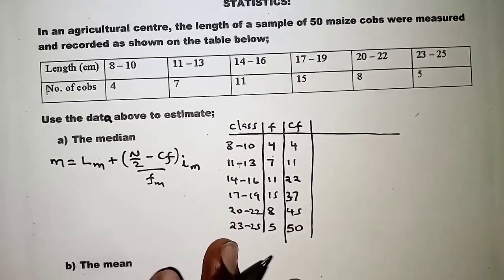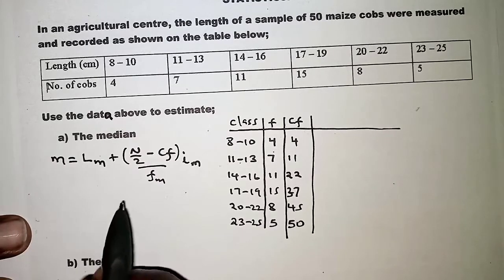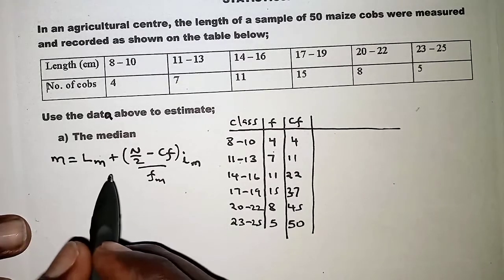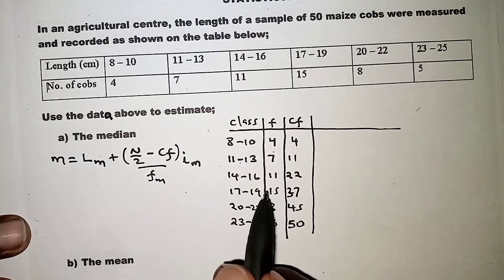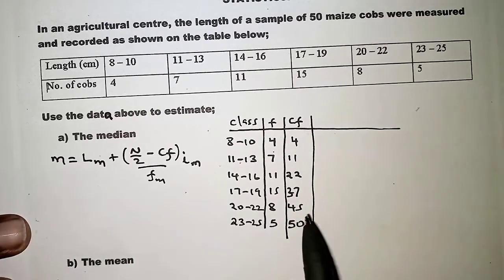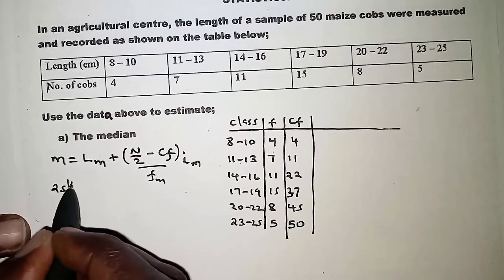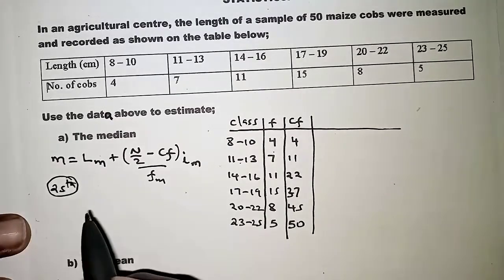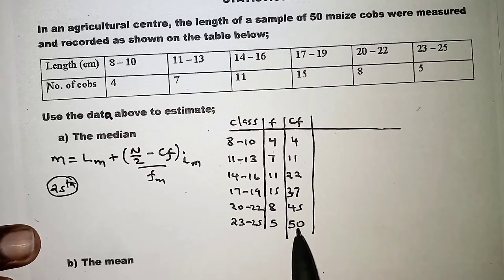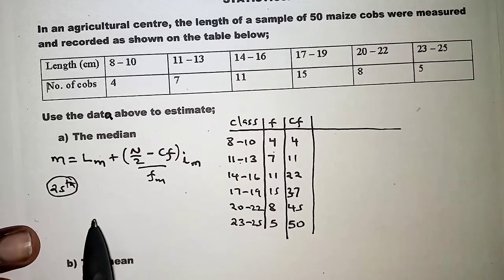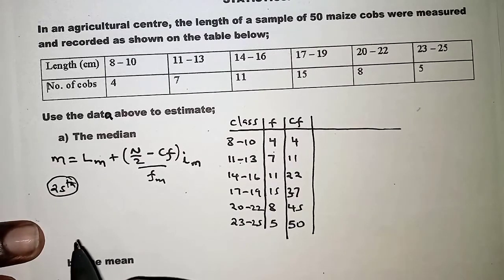The median will be obtained by substituting values into the formula. First we need to identify the median class. The median lies in the middle of 50 items, at the 25th position. We take the total number of items, 50, divided by 2, which gives us the position of the median value.